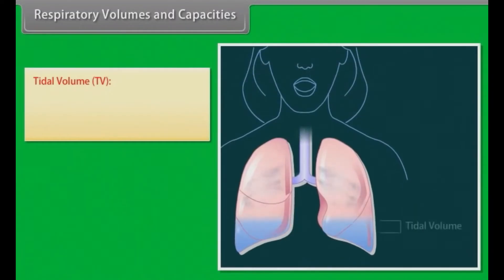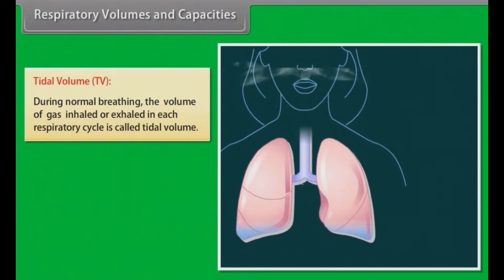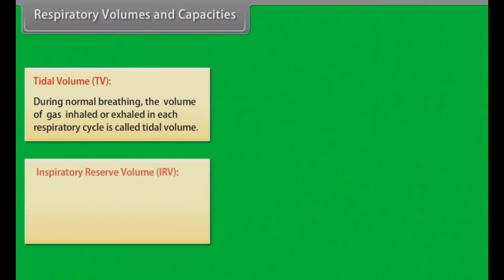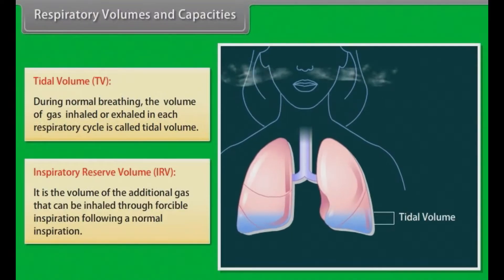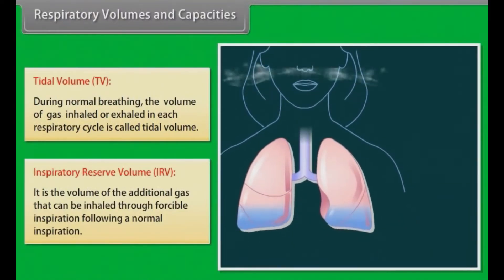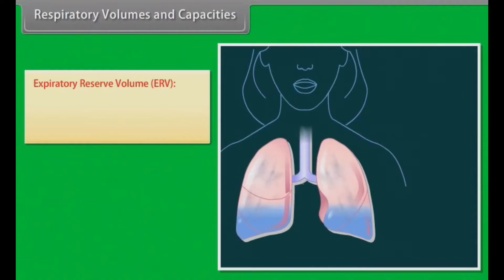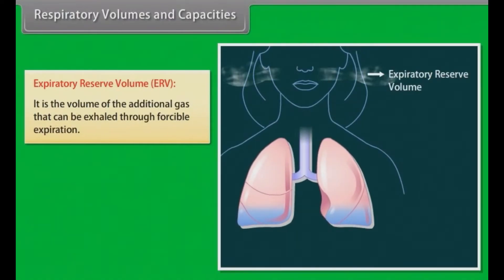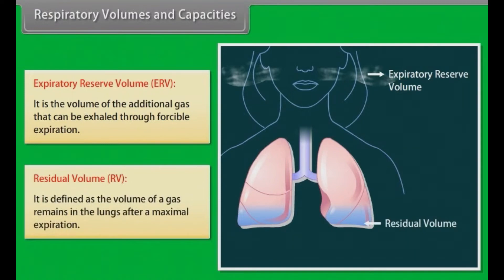Respiratory Volumes and Capacities. Tidal Volume (TV): During normal breathing, the volume of gas inhaled or exhaled in each respiratory cycle is called the tidal volume. Inspiratory Reserve Volume (IRV): The volume of additional gas that can be inhaled through forcible inspiration following a normal inspiration. Expiratory Reserve Volume: The volume of additional gas that can be exhaled through forcible expiration. Residual Volume (RV): The volume of gas that remains in the lungs after a maximal expiration.